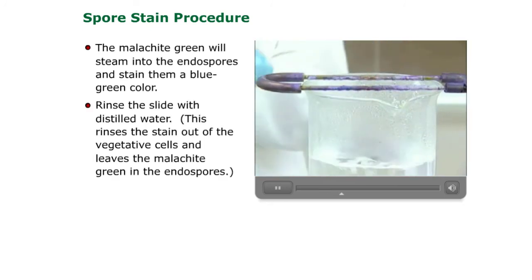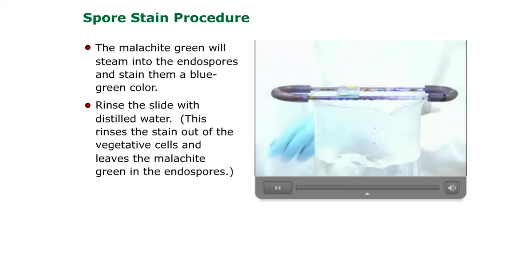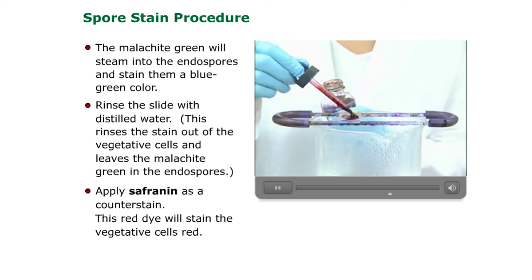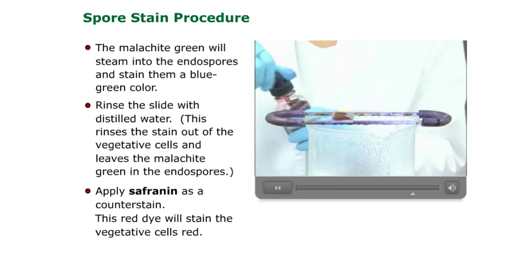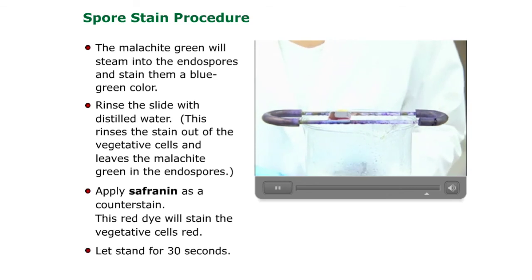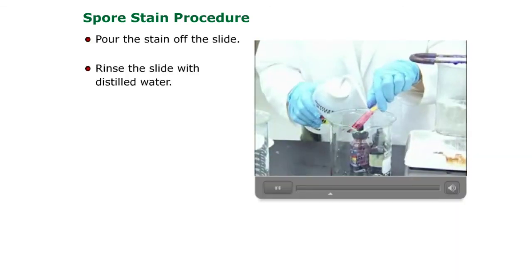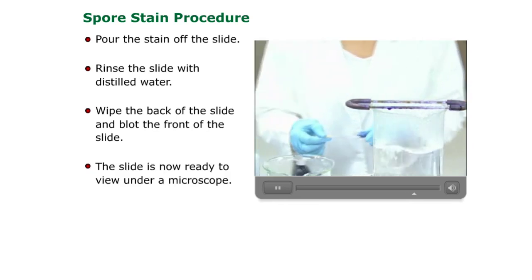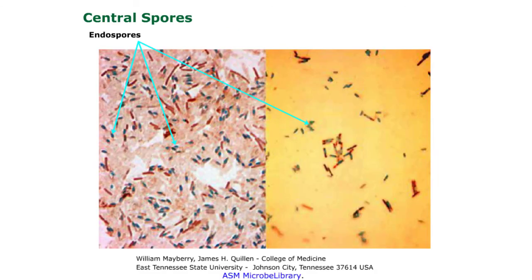After one minute, you will take the slide and rinse it with distilled water. Then continue the stain by using safranin as a counterstain. The safranin will stain the vegetative cells red and the endospores will remain a blue-green color. Leave the safranin on for 30 seconds, then pour it off. Rinse, then dry your slide to use under the microscope. The slide is now ready to view under the microscope.